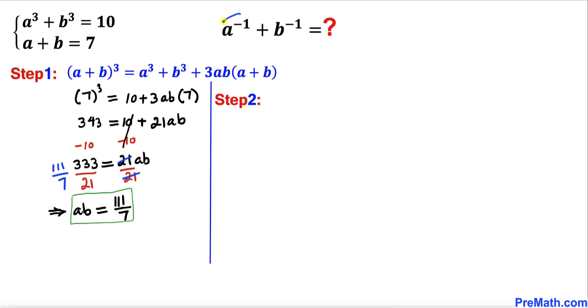Let's focus on this expression a⁻¹ + b⁻¹. Here I have copied it down, and we can see that a⁻¹ could be written as 1/a, and likewise b⁻¹ could be written as 1/b. Now let's go ahead and add these two fractions by crisscross method.